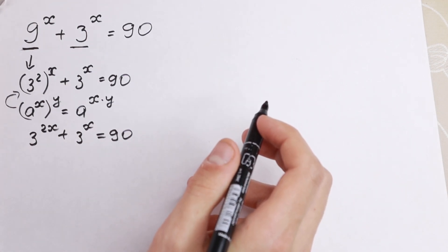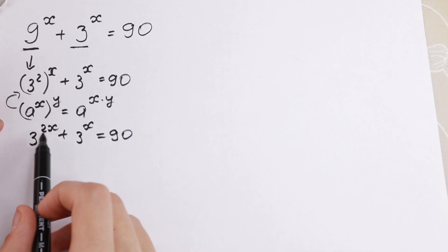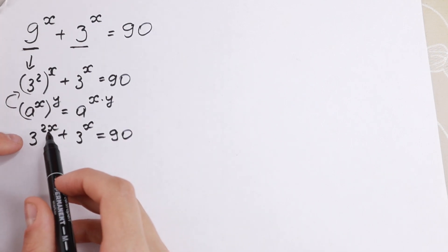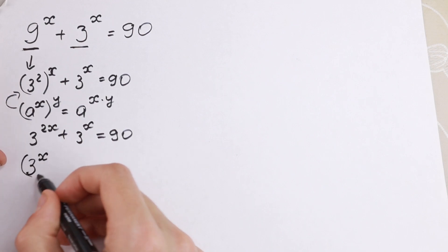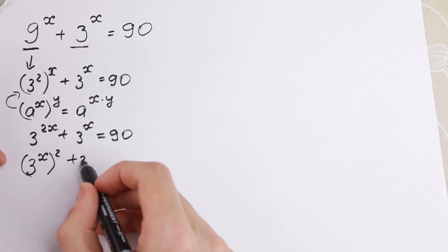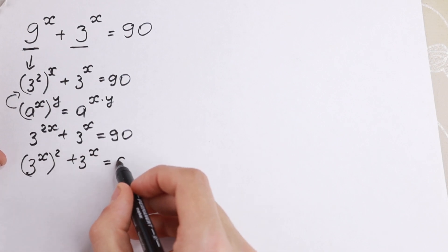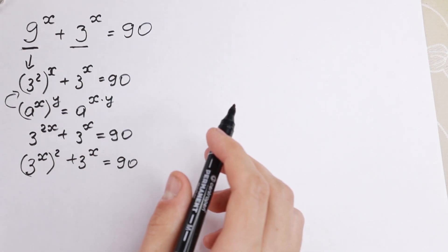And we need to know the last step, the rule of interchange. So we can swap these two elements because this is a product. And we can write this way as 3 to the power x times square plus 3 to the power x equal to 90. So this is the rule of interchange.